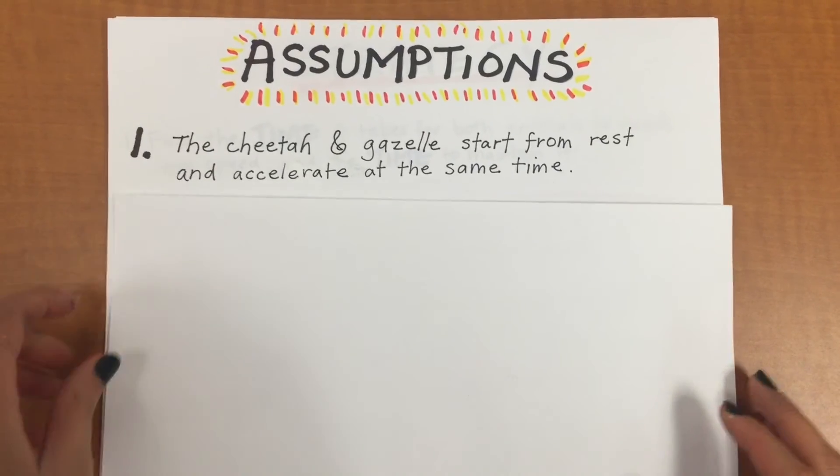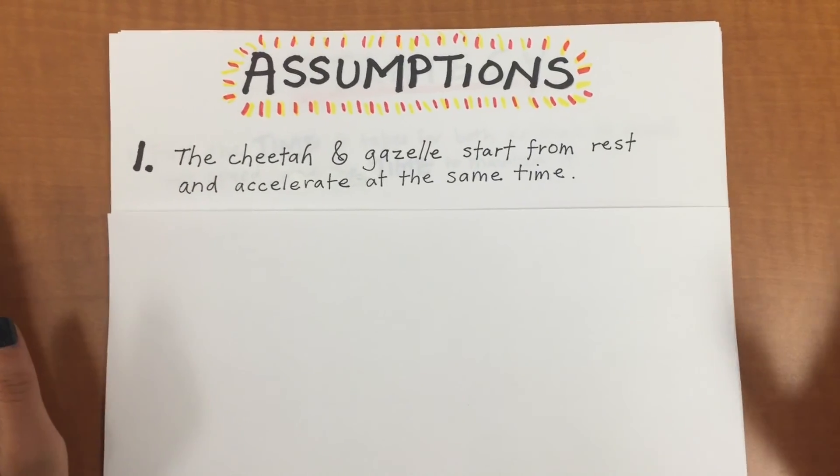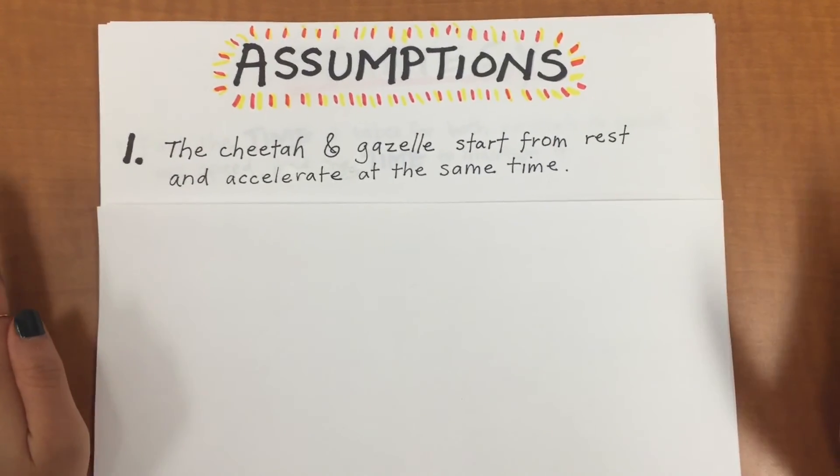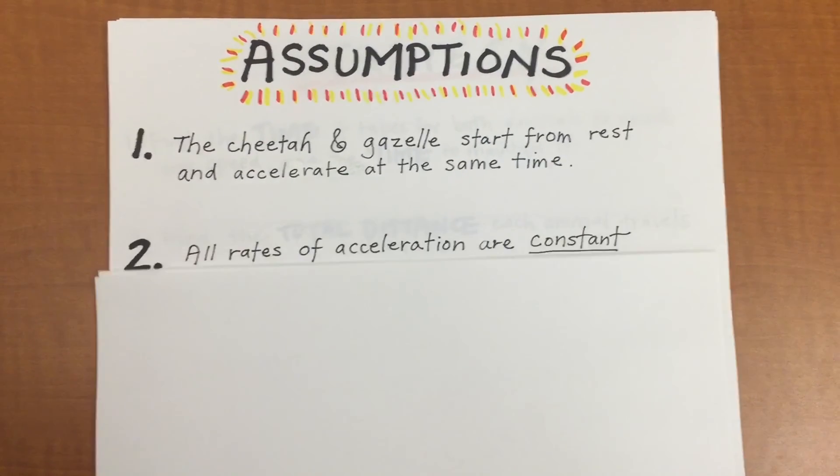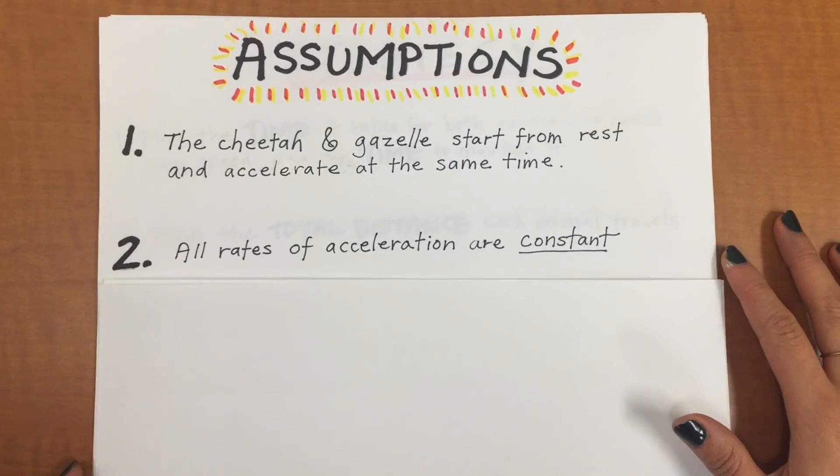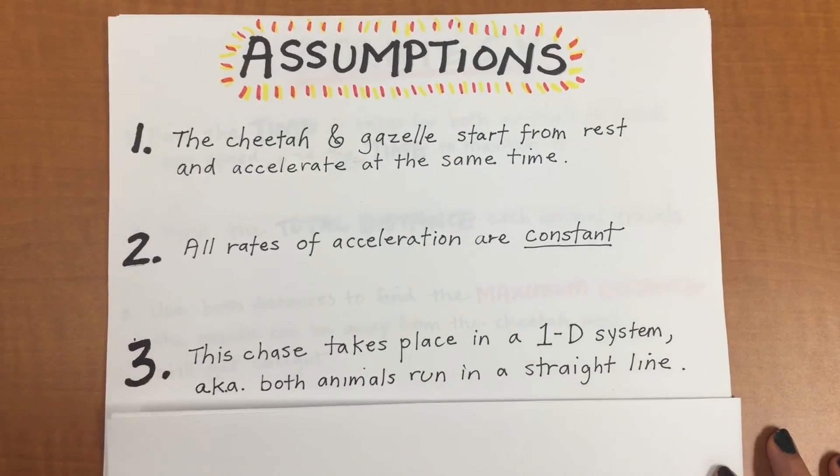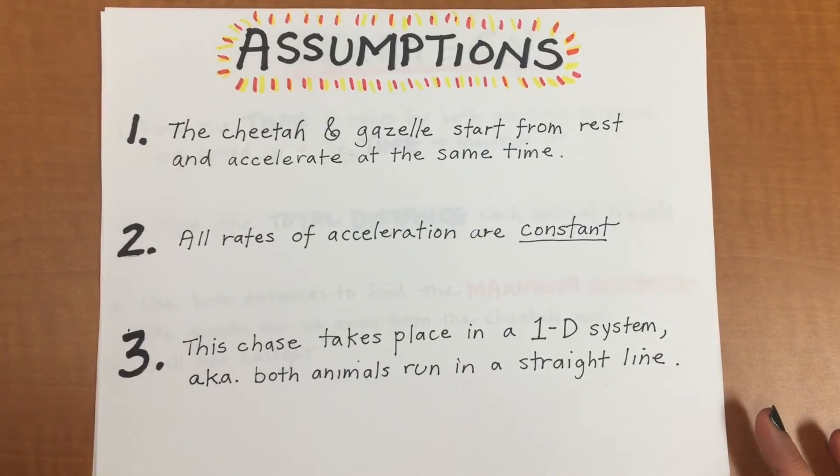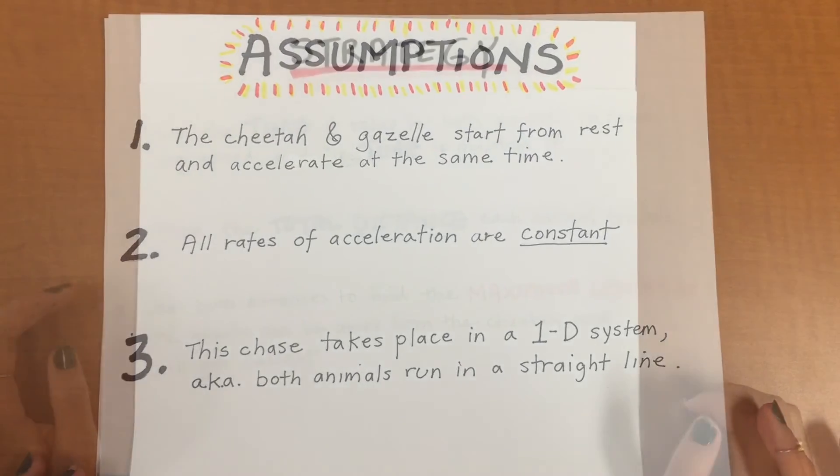The first assumption we make is that the cheetah and gazelle start from rest and accelerate both at the same time. The second assumption we make is that all rates of acceleration are constant. The third is that this chase takes place in a one-dimensional system, meaning that both animals run in a straight line.